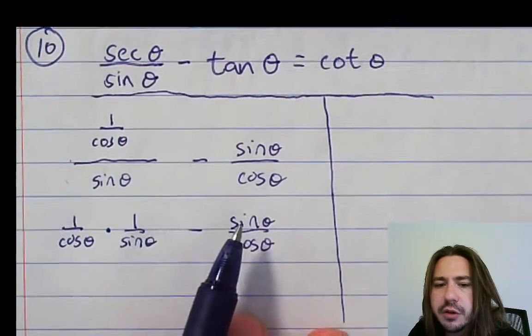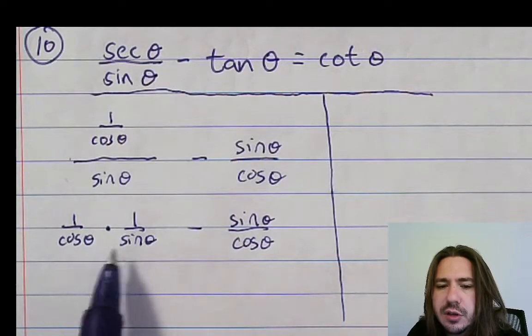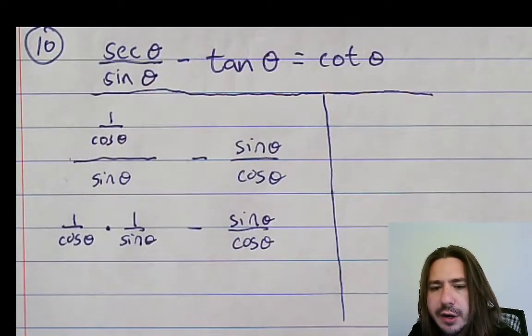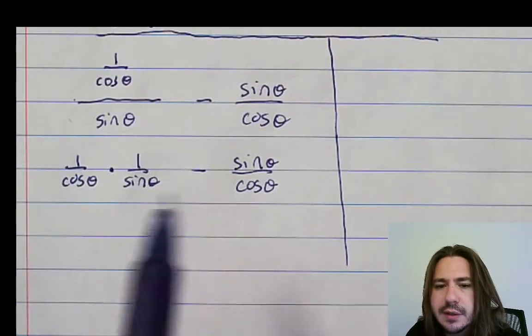Although it does look like, just kind of looking forward, once we combine this, we're going to want to subtract these. So we're probably going to need to find a common denominator and kind of go from there. So we may be able to knock out two steps here. Let's see what we've got.